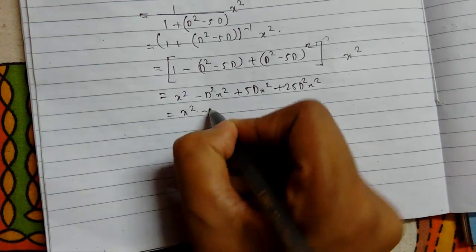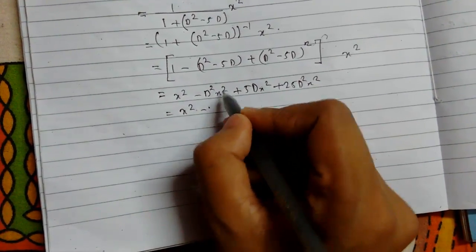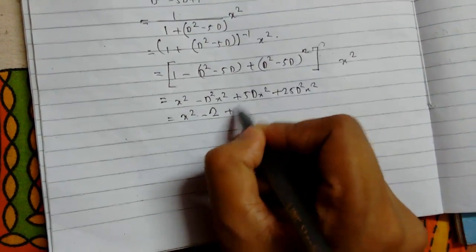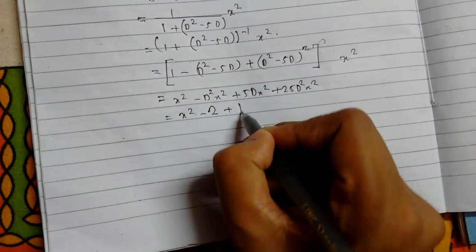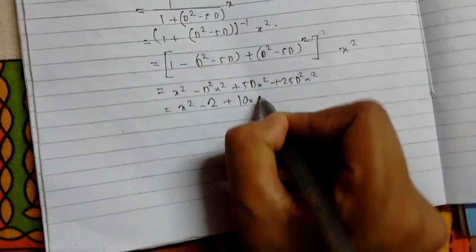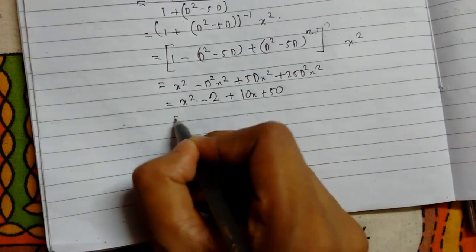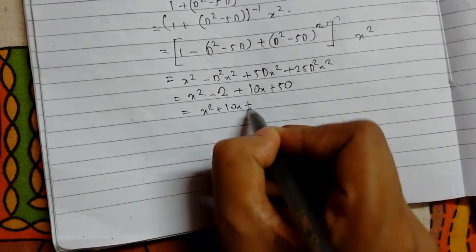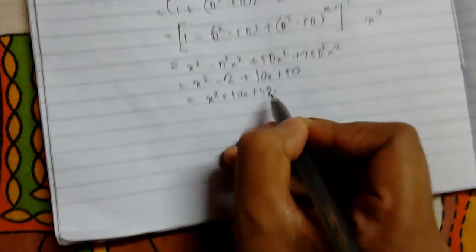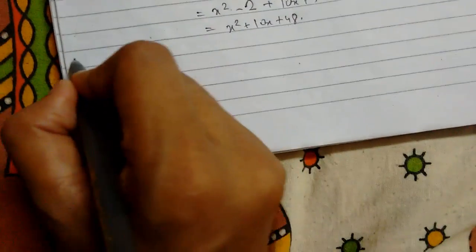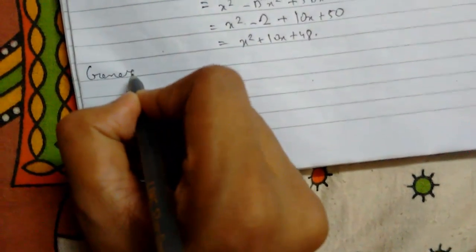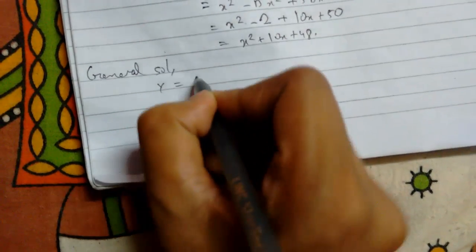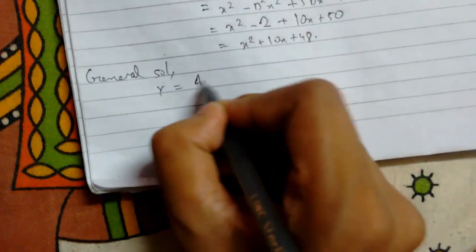Now computing the derivatives: D(x²) = 2x, D²(x²) = 2. Substituting: x² minus 2 plus 10x plus 50, which simplifies to x² + 10x + 48. So the general solution is y equals CF plus PI.